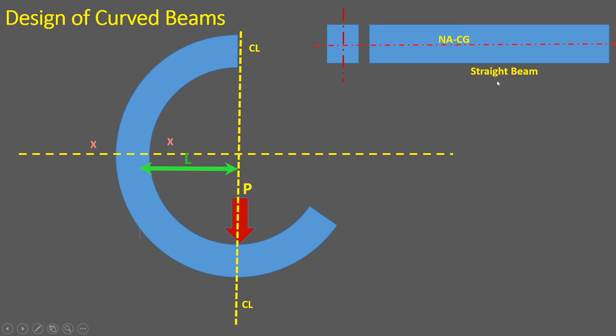Consider a straight beam of rectangular cross-section. In a straight beam, the neutral axis and central axis are collinear or coincident. Straight beams are commonly observed in buildings, placed below the roof to carry the concrete load, supported between two columns.